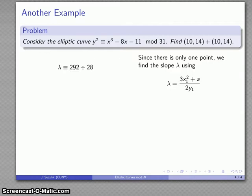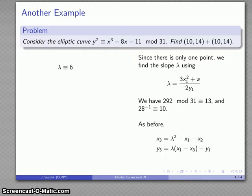And mod 31, that's going to have an inverse of 10, so that's 292 times 10. And I'll simplify, and the slope is going to be 6. Likewise we can use our formula for computing the location of the point, and that gives us our final solution.